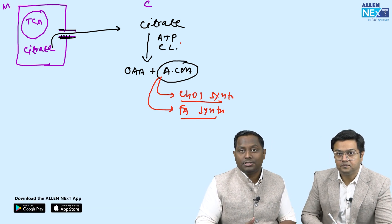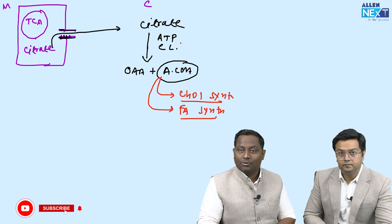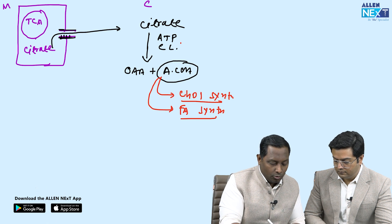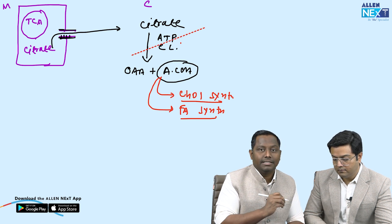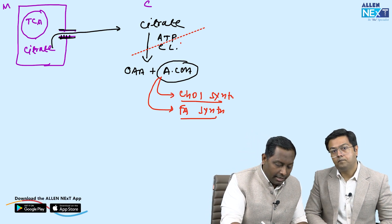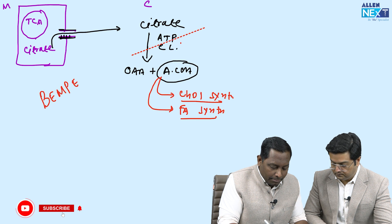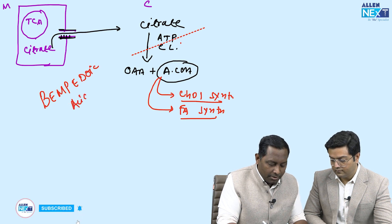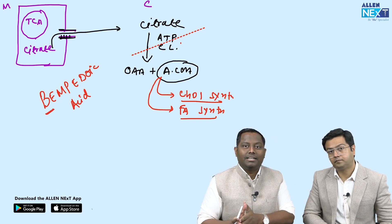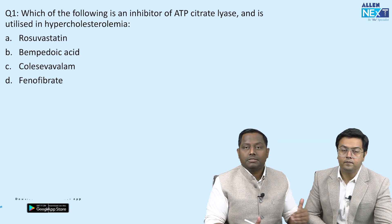Excellent! ATP citrate lyase is involved in cholesterol synthesis — it causes breakdown of citrate to oxaloacetate and acetyl CoA. If we inhibit this ATP citrate lyase, citrate will not lead to cholesterol synthesis. That is exactly what is done by bempedoic acid. Remember: A for ATP citrate lyase and B for bempedoic acid. Currently, bempedoic acid is the next best alternative to statins.